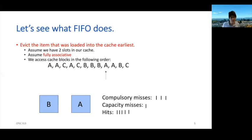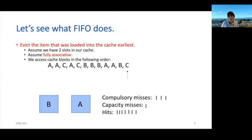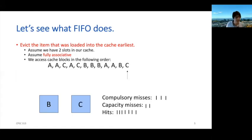We took a capacity miss for that, but we go on, get another A — that's a hit. We get B — also a hit. And we don't take another miss until we get to C. So FIFO is a little different than LRU: it's really about how long you've been in the cache, not how long since you've been accessed. In some ways it can sometimes be easier to implement. If we count up our hits and misses, we see a hit rate of about 7 out of 12, which was comparable to what LRU gave us.